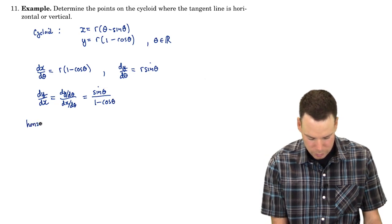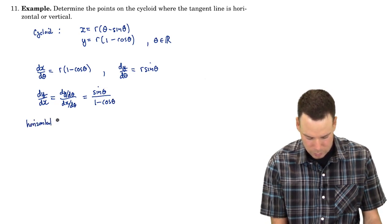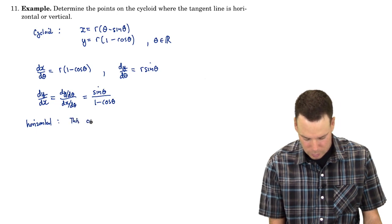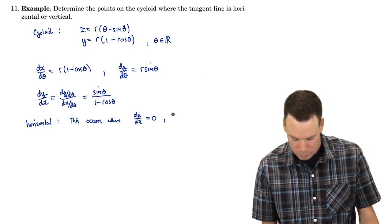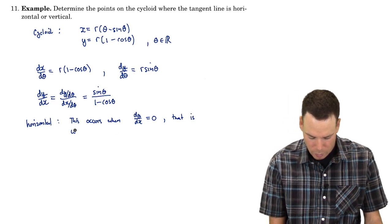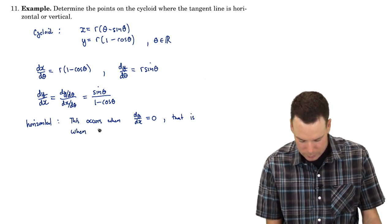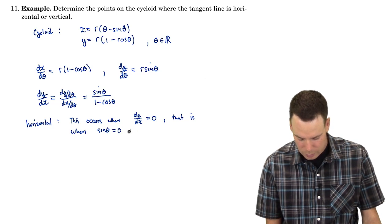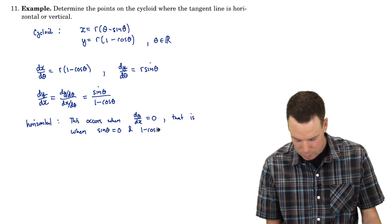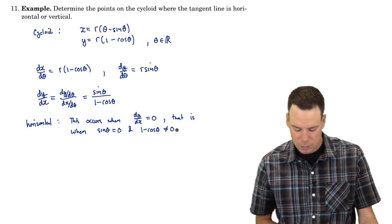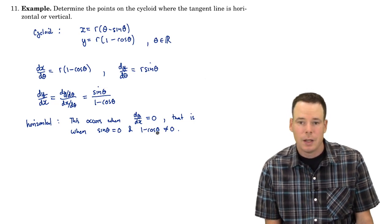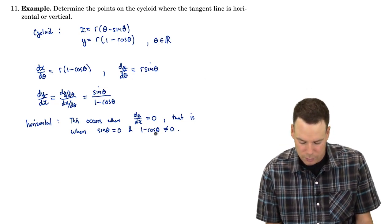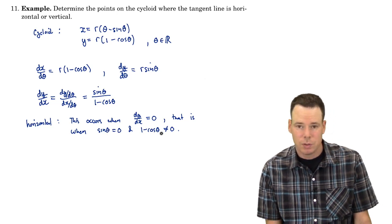Where is the tangent line horizontal? Well this occurs when dy by dx is 0. So that is when sine theta is 0 and we better make sure that the denominator is non-zero, so I don't have a 0 over 0 case. So that means I want sine theta to be 0 but I want cos theta not to be equal to 1.